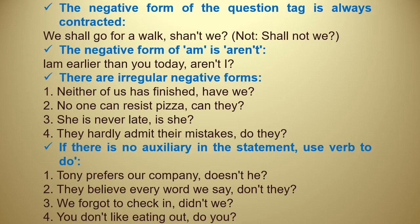If there is no auxiliary in the statement, use the verb 'to do.' Examples: 'Tony prefers our company, doesn't he?' 'They believe every word we say, don't they?' 'We forgot to check in, didn't we?' The verb 'forgot' is past simple, so we use 'did.' If the verb is in the present simple, such as 'prefers' or 'believe,' we use 'does/doesn't' or 'do/don't.' Example: 'You don't like eating out, do you?'